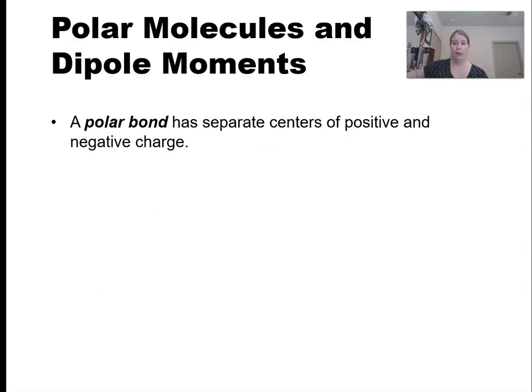So a polar bond has a difference in electronegativity in the atoms that are sharing. One atom is more electronegative, which means it's more attractive to the electrons in that bond. That's the definition of electronegativity. So you will end up with one atom hanging on to the electrons preferentially over the other. So you end up with a positive side and a negative side. They're not ions. So this is a partial positive and partial negative charge. If it was plus minus, we'd have an ionic compound.